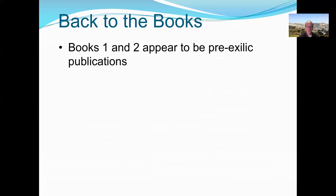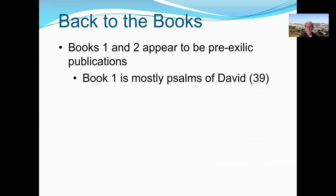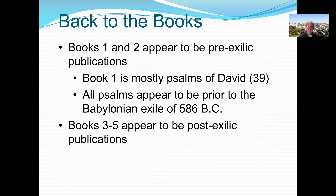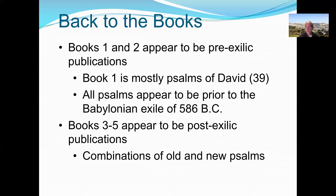Returning to the five-book structure: Books One and Two appear to be pre-exilic publications, essentially completed before the Babylonian exile. Book One is dominated by psalms of David — after the first two psalms with no attribution, the remaining 39 in a row are all attributed to David, pointing to a pre-586 BC composition. Books Three through Five appear to be post-exilic publications, though that doesn't mean all psalms within them are post-exilic — some are old psalms of David included alongside newer ones.